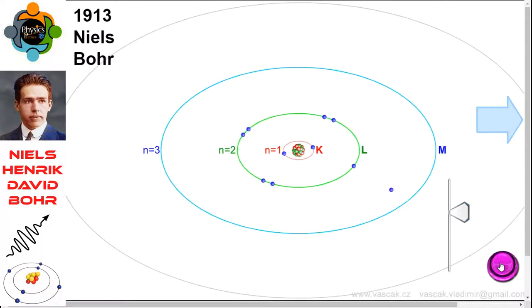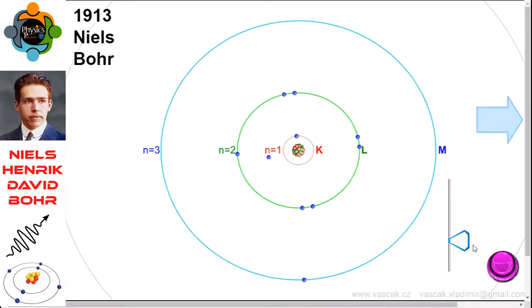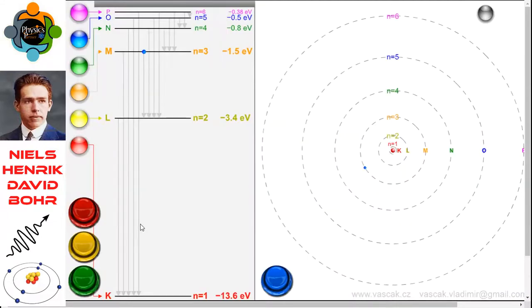In the Bohr model, the electrons travel in defined circular orbits around the small positively charged nucleus. The Bohr model is known as the planetary model because these orbits look similar to that of planets orbiting the Sun. You can see on the screen it looks like the planets orbiting the Sun.